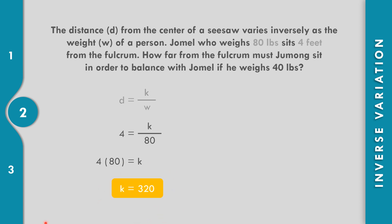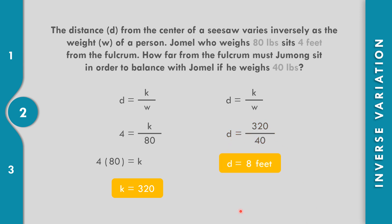Let us continue to solve for D equals k over W to find how far from the fulcrum Jomel must sit in order to balance. The weight of Jomel is 40 pounds and our k is 320. So, D equals 320 over 40. Dividing 320 by 40, D equals 8 feet. So, Jomel must sit 8 feet from the fulcrum.